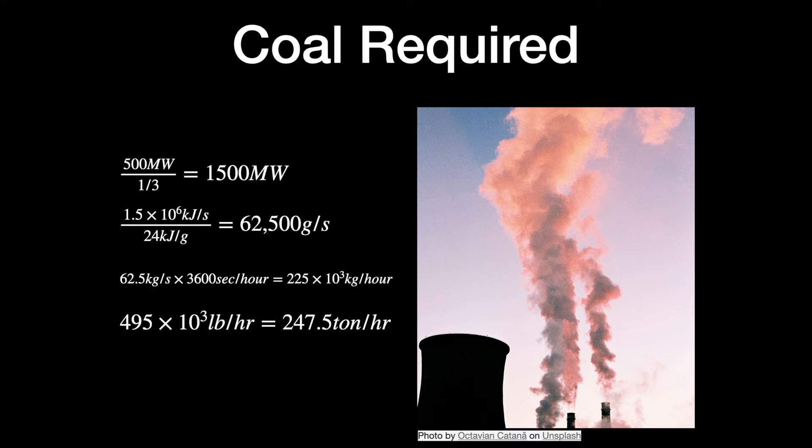So, if we look at balancing this mass and energy, we have about 1500 megawatts of energy required to get the 500 megawatts of output because of the loss of efficiency. And so, if we divide that 1500 megawatts by our energy input from the coal of our 24 kilojoules per gram,